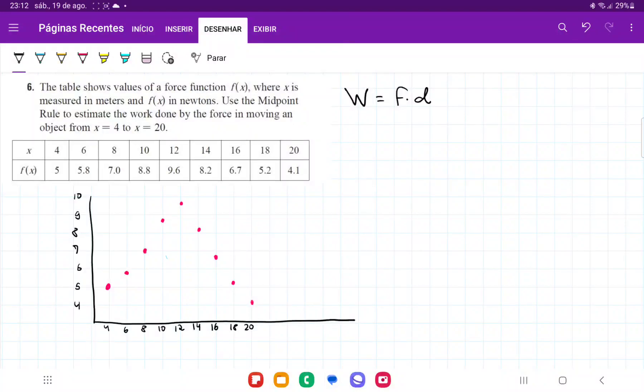So for number 6, we're given a bunch of points that represent a force function where x is measured in meters and f is in newtons.